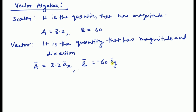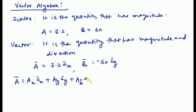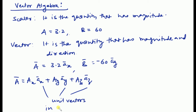Here A and B are vectors with magnitude and direction. In Cartesian coordinate, we write a vector as AX·ax + AY·ay + AZ·az, where ax, ay, az are the unit vectors in x, y, and z directions respectively.